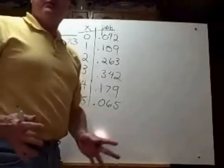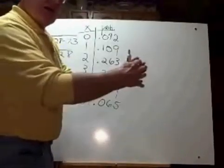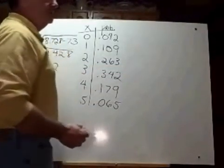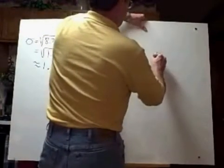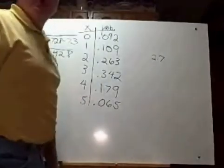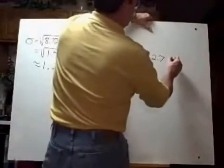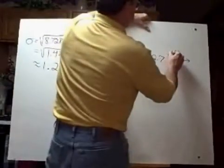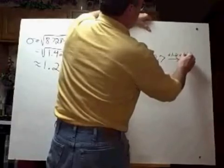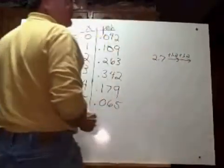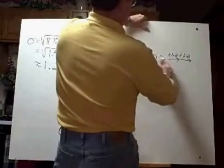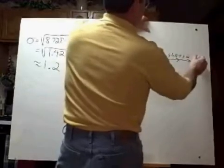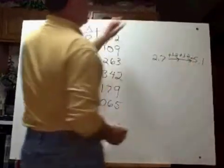We know that to find the range of normal, usual values, we start with a mean and go two standard deviations in either direction. So let's start with the mean, which was 2.7, rounding it to 1 decimal place. And we're going to go two standard deviations to the right. So we've got standard deviation 1.2. We're going to go plus 1.2, plus another 1.2. And that's going to take me all the way over to 5.1. That's equal to 5.1.